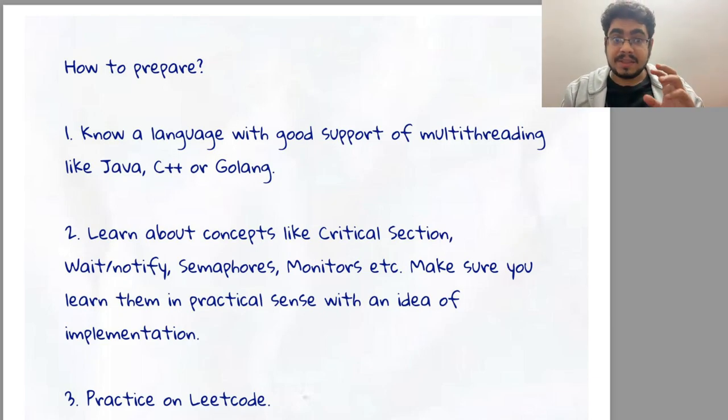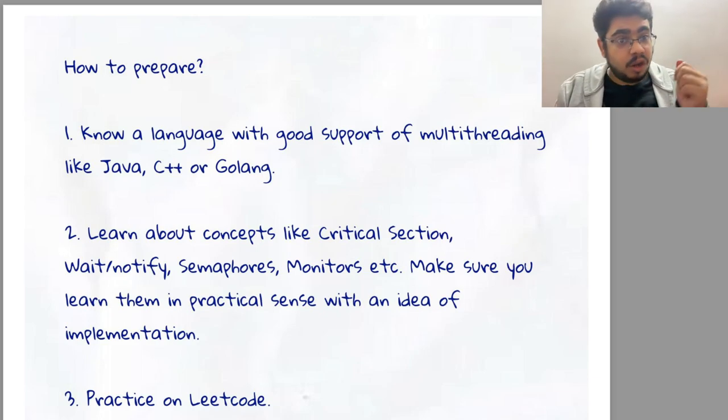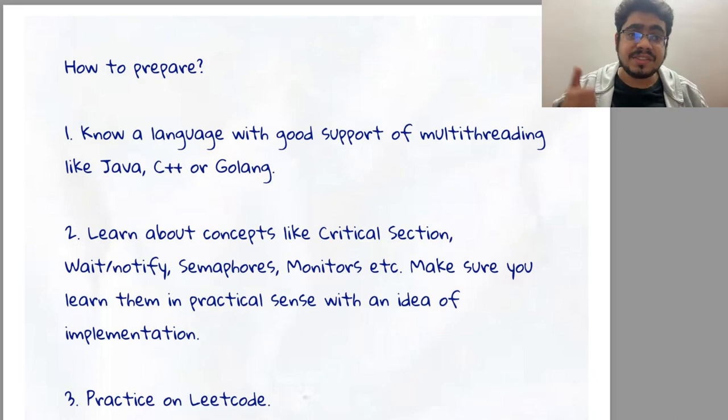Second, learn about the major concepts of critical sections, what is wait and notify, what are semaphores, what are monitors. All these things will actually combine together to make sure that you are able to write deadlock-free code. Also, just knowing the theory is not enough. Actually code the stuff out. Code producer-consumer, code dining philosopher problems, all these named problems to make sure that you are actually able to see how they run in a multi-threaded environment.